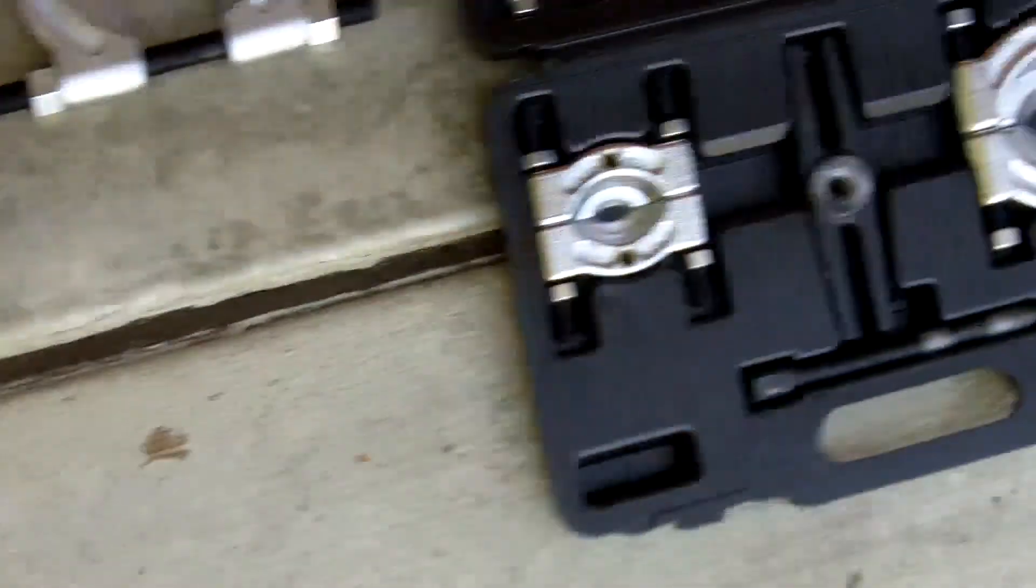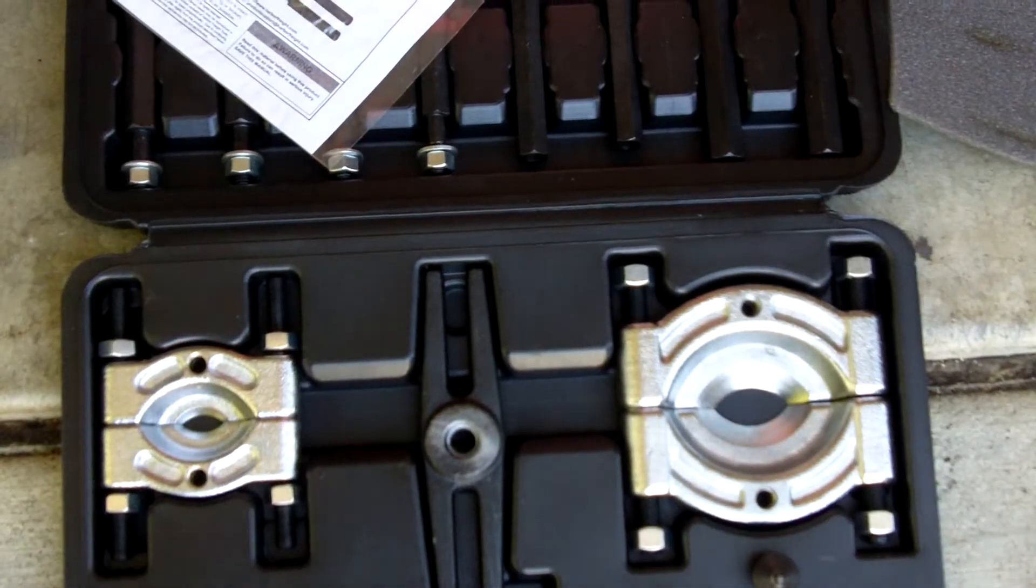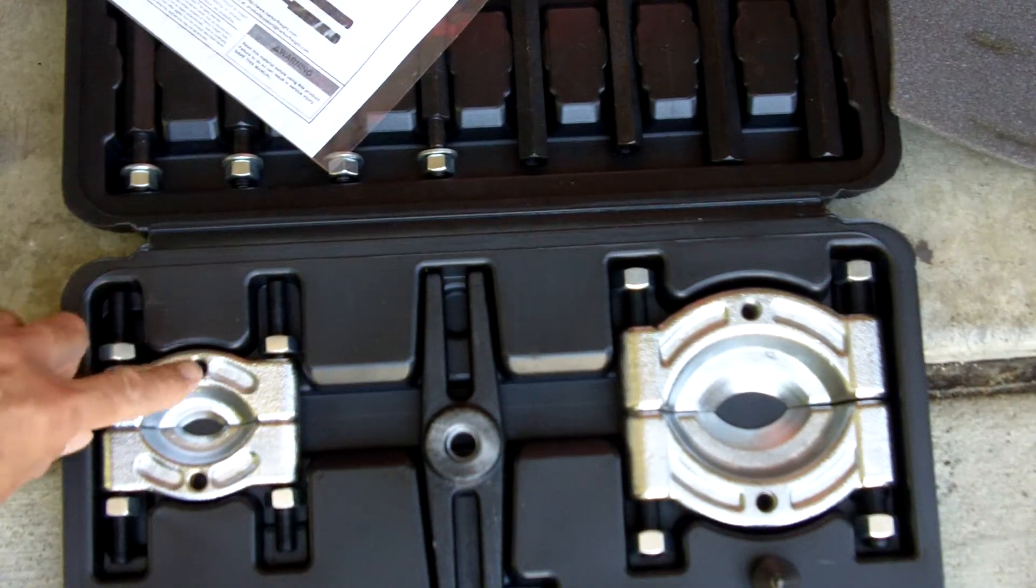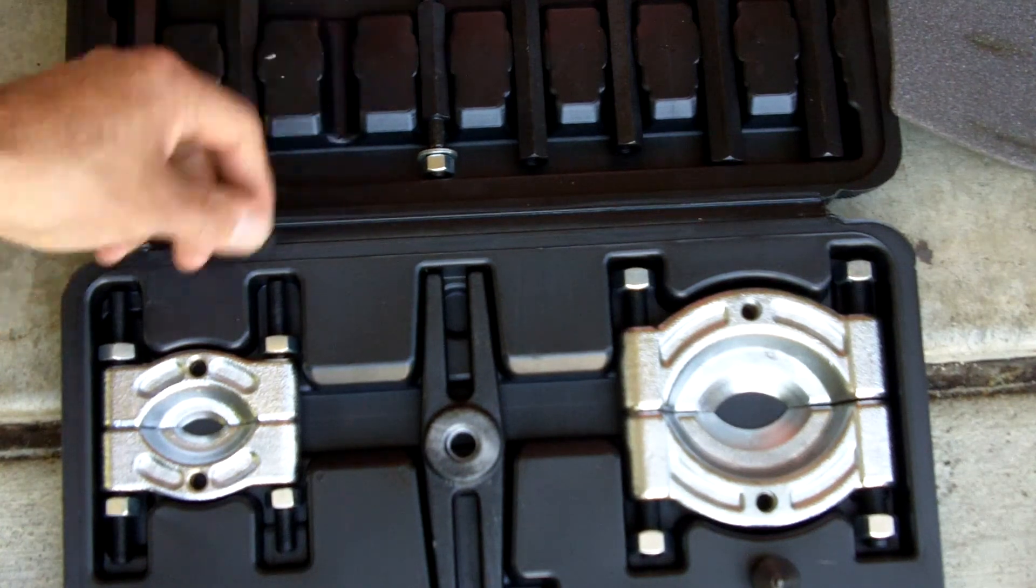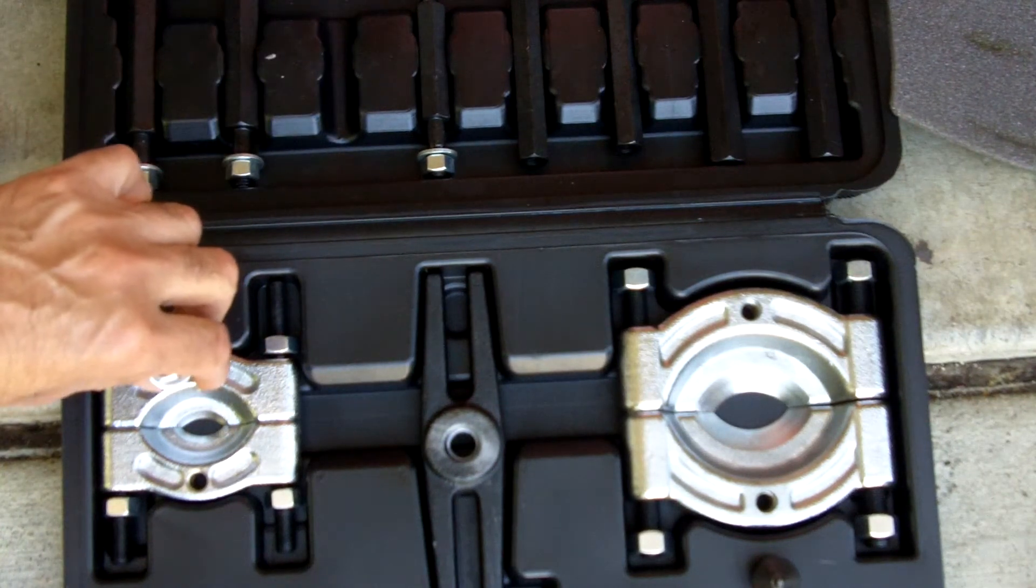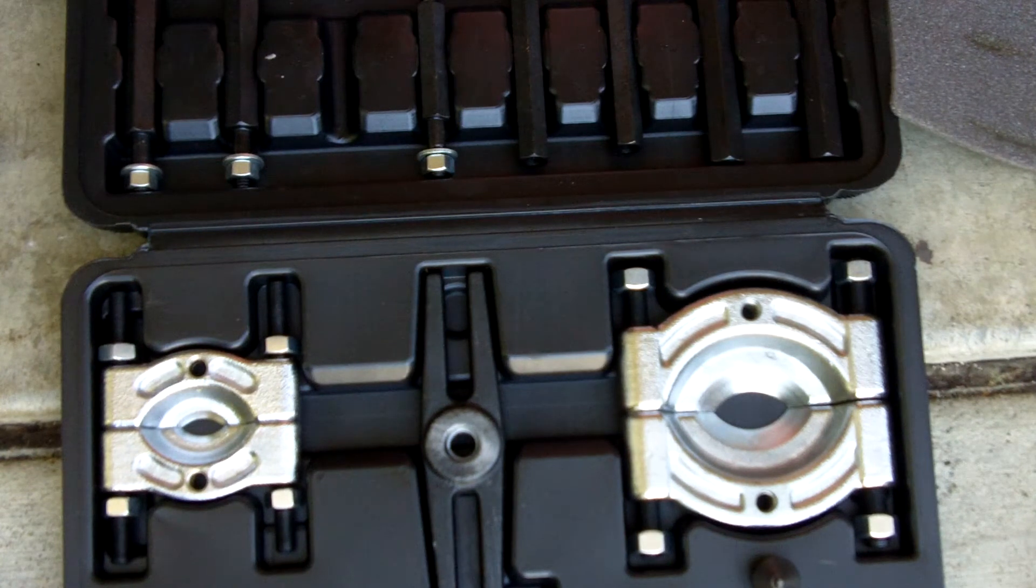But with the Maddox, the difference is with the set I had, these holes down here are 3/8 by 16 that goes in there. The Maddox is a 5/8 by 18 thread.